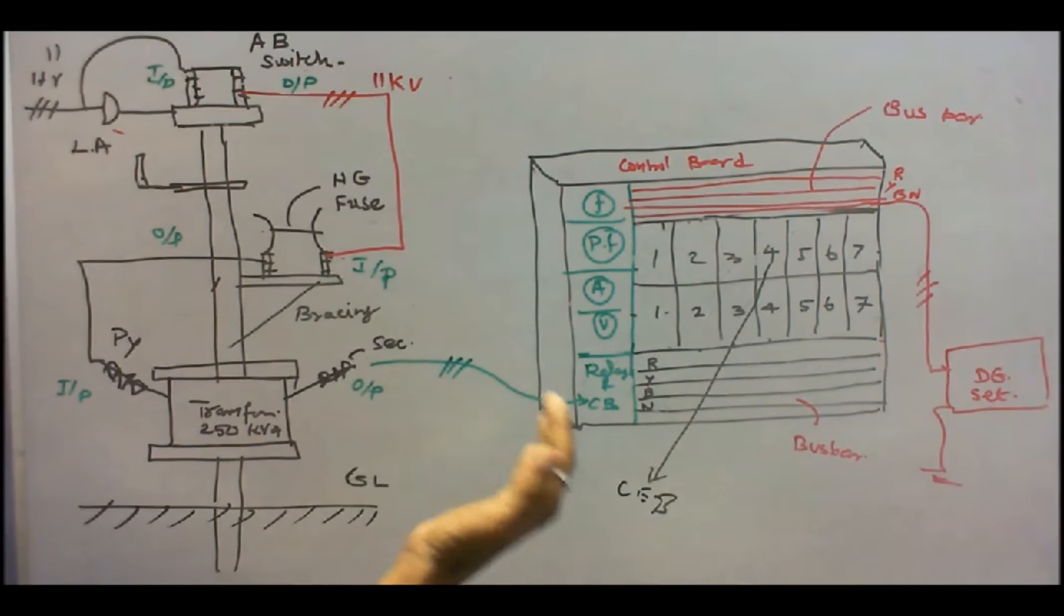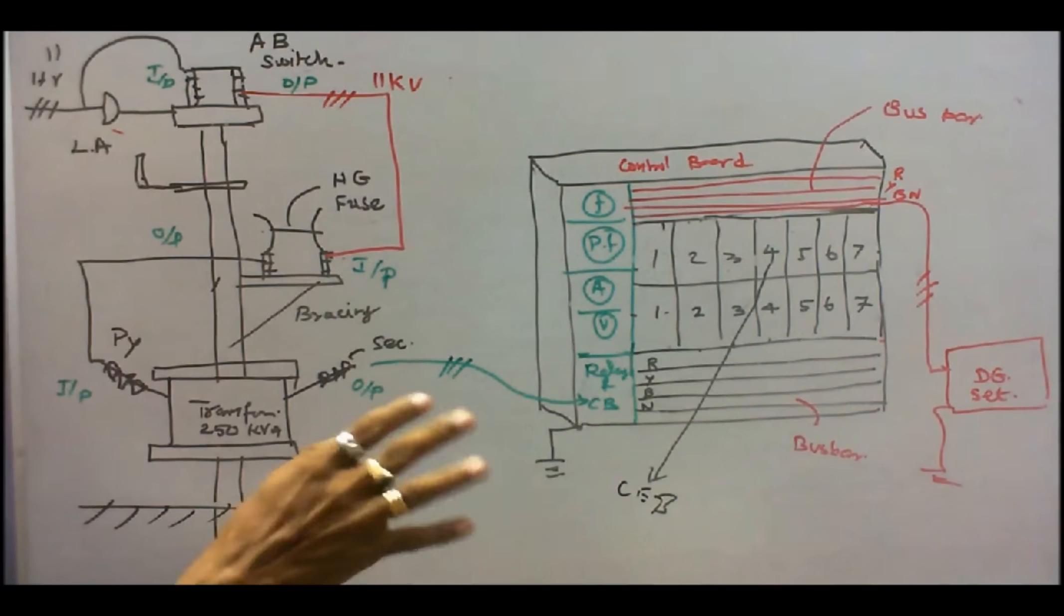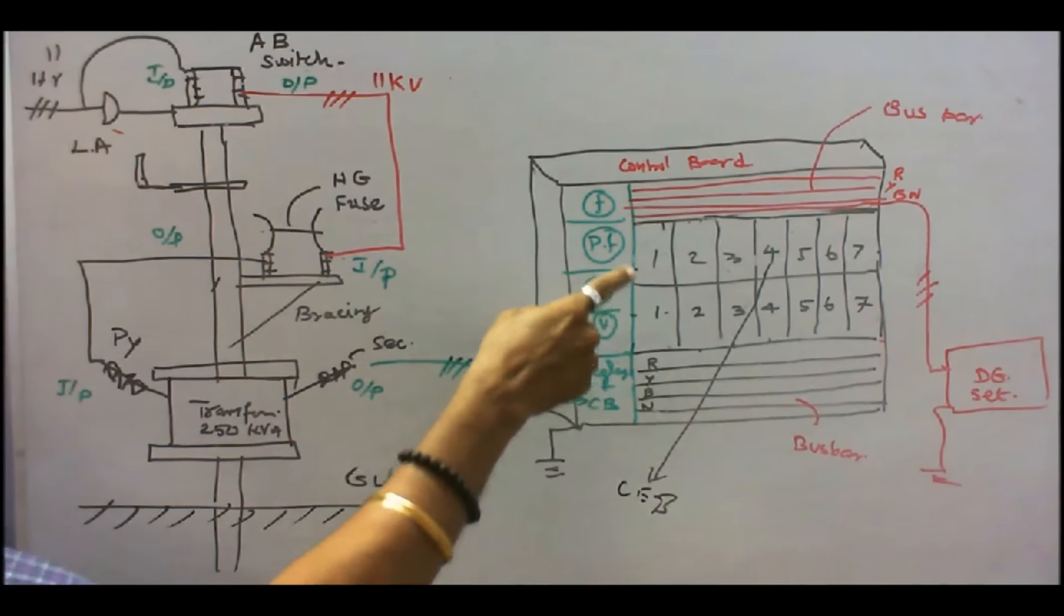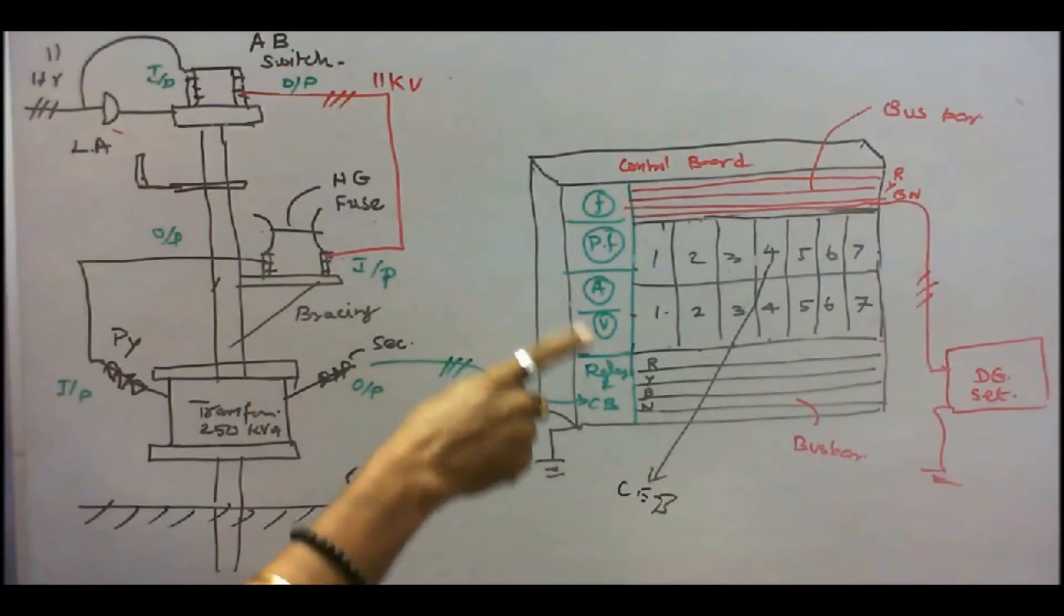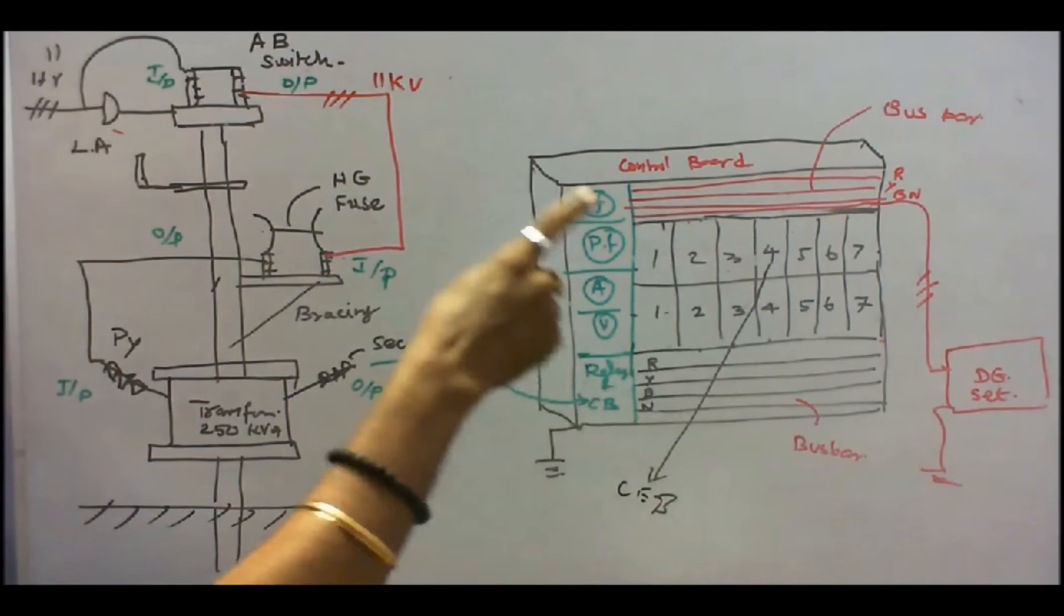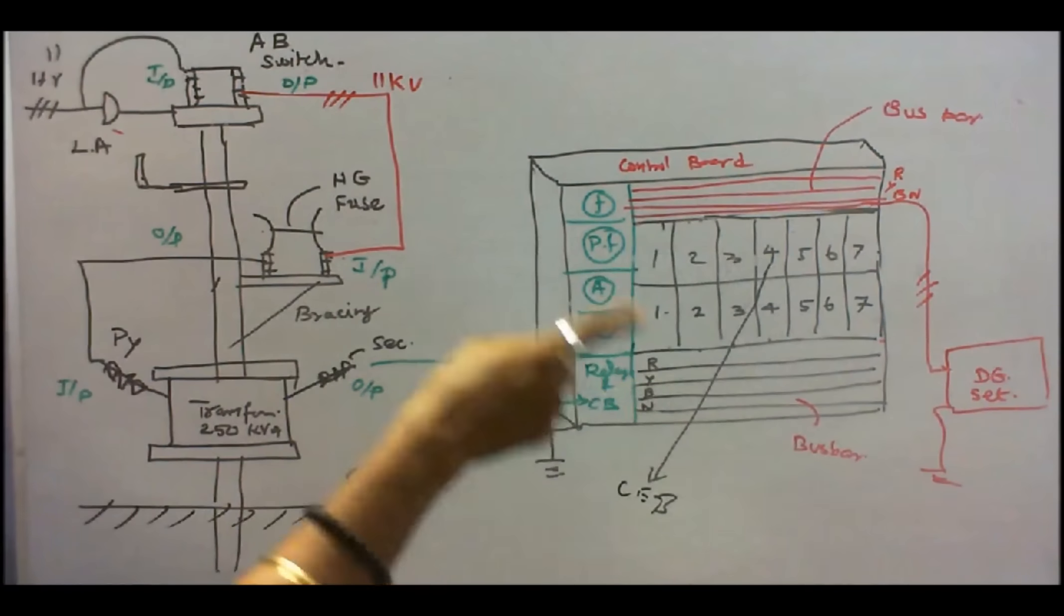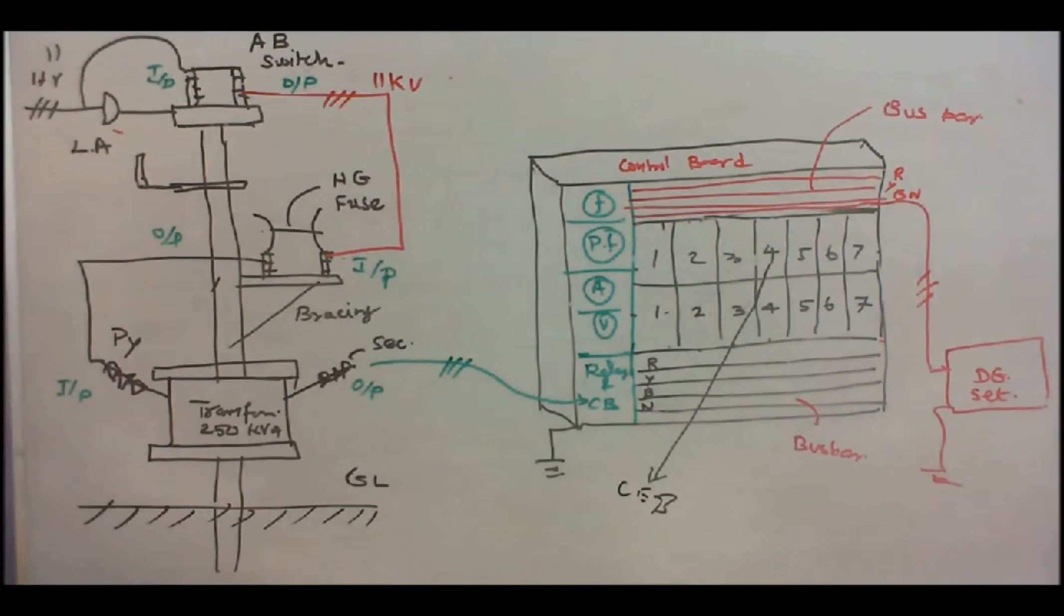Suppose I want to operate some part of the load on TNEB supply and some part on the DG set. What I have to do? These switches are interlinked. That is a very interesting thing. I can't operate the switch at the same time. Suppose I want to operate switch 4, I must switch off the switch 4 then only I can switch on. Such a way that it has been designed. So from the switch output goes to the civil engineering block.